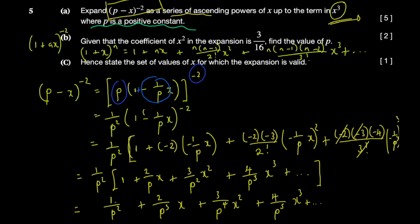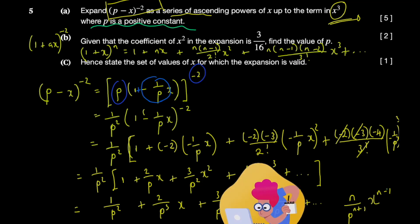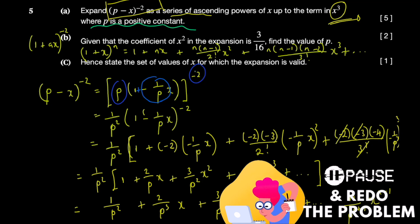The general term can be identified: the numerator for the nth term is n, and the power of p in the denominator is p^(n+1), while the power of x is x^(n-1). So the general term is n / p^(n+1) · x^(n-1).